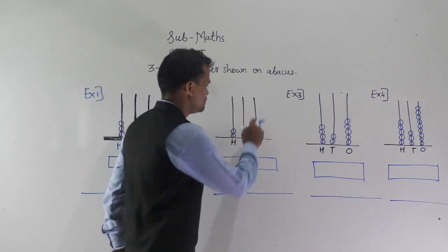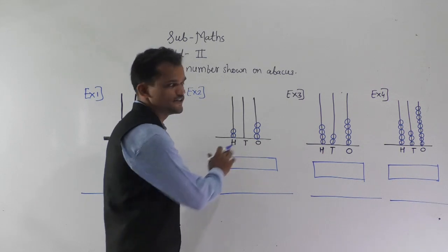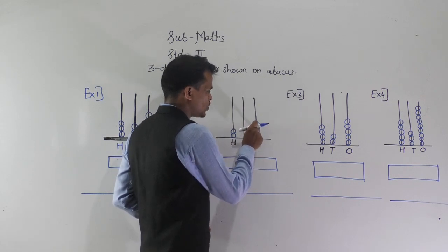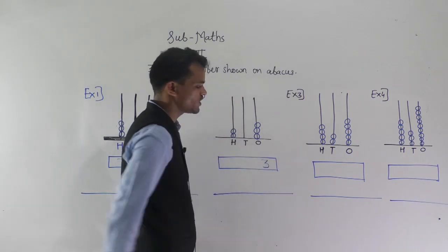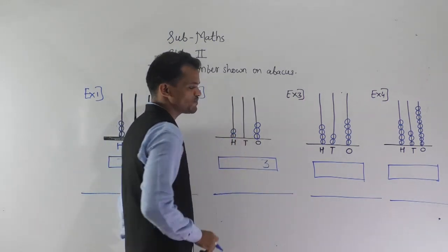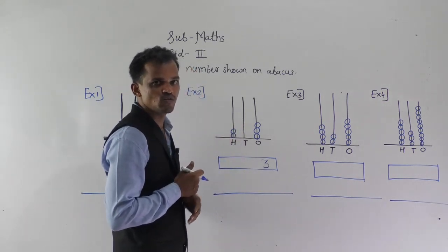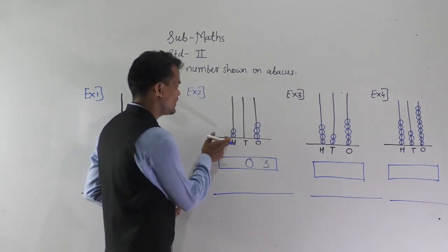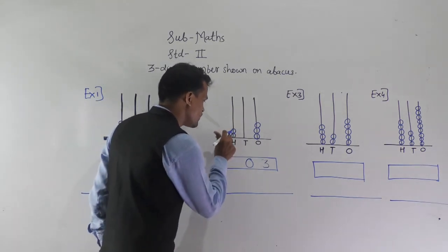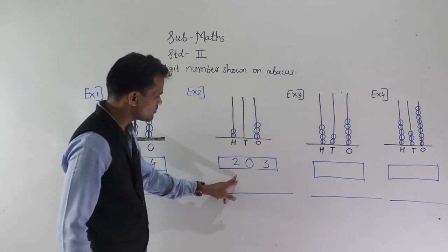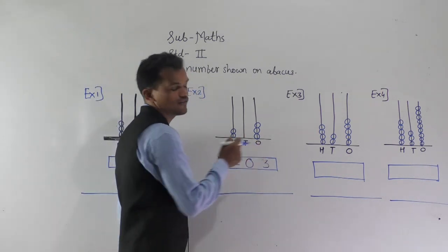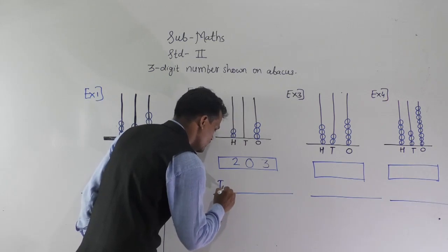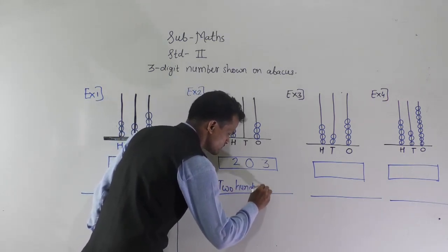In the next example, beads are already placed on the spikes and we need to read the number. In the ones place spike there are three beads, so write three. In the tens place spike there are no beads, so write zero. In the hundreds place spike there are two beads. So the number is two hundred and three.